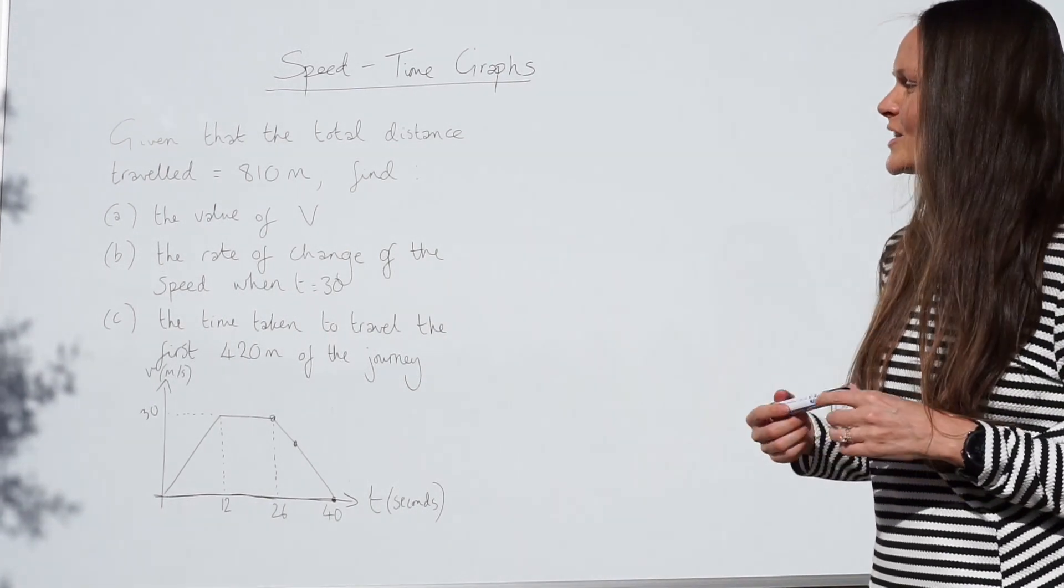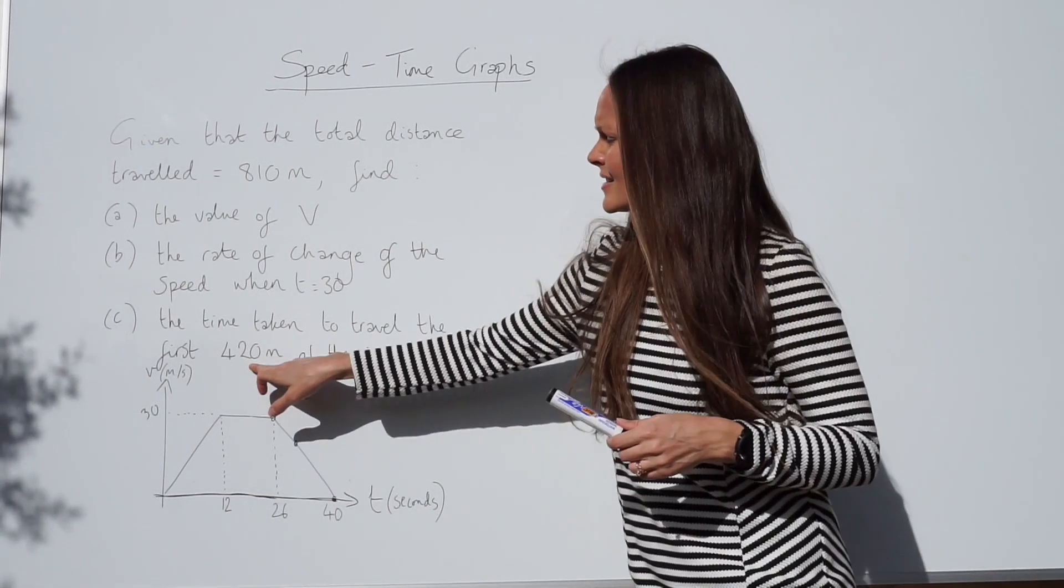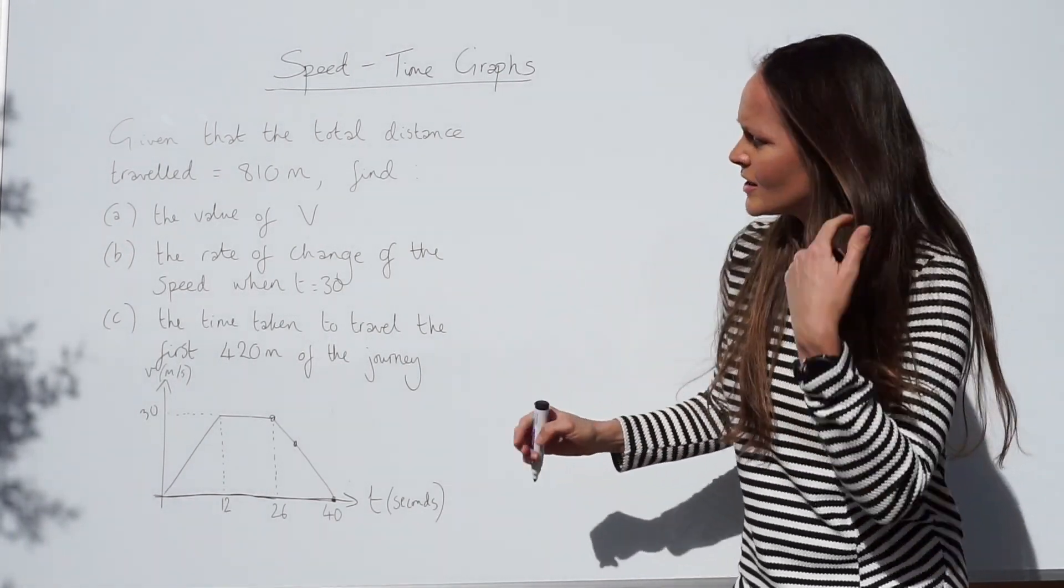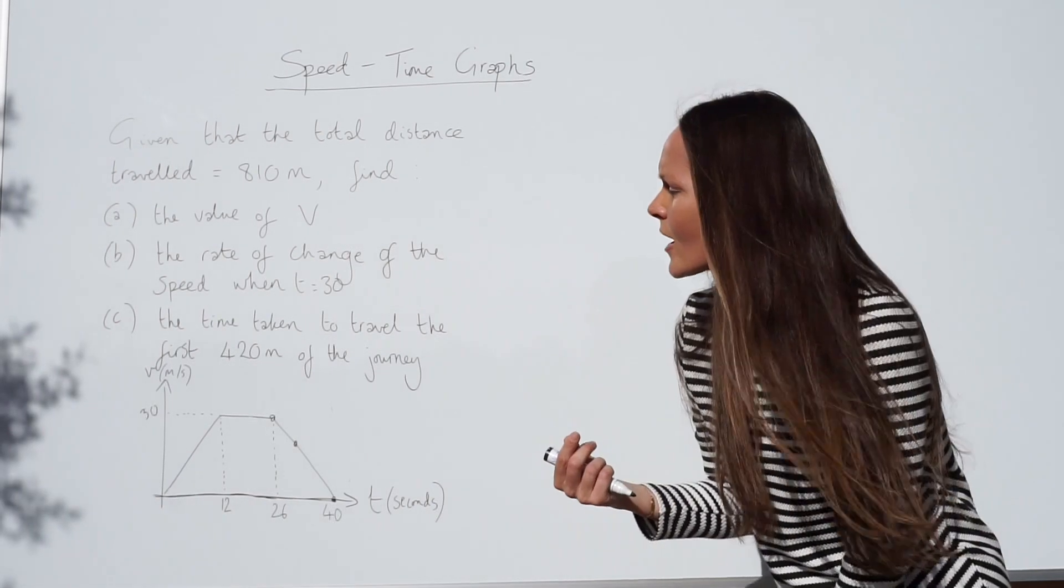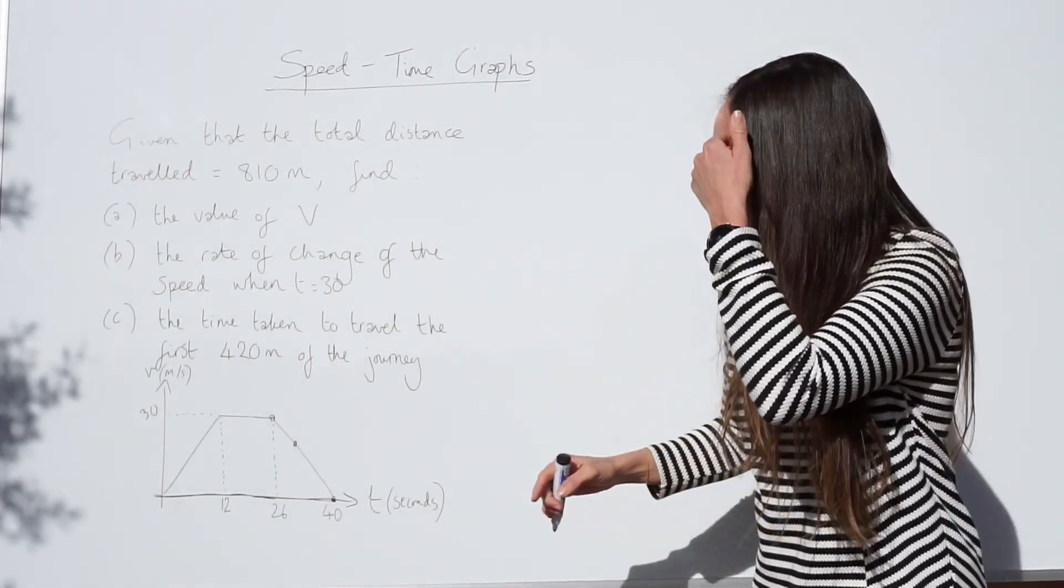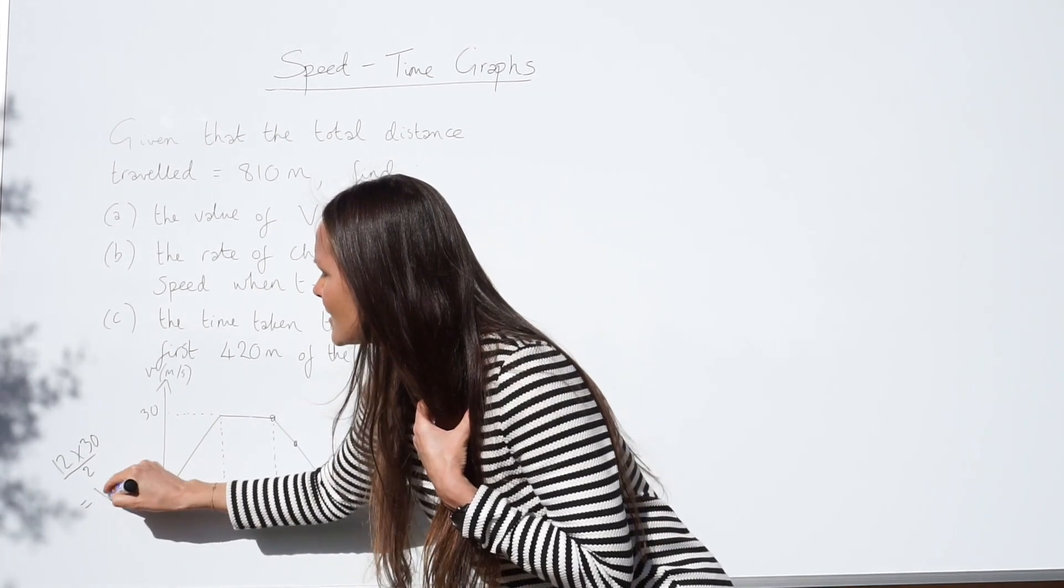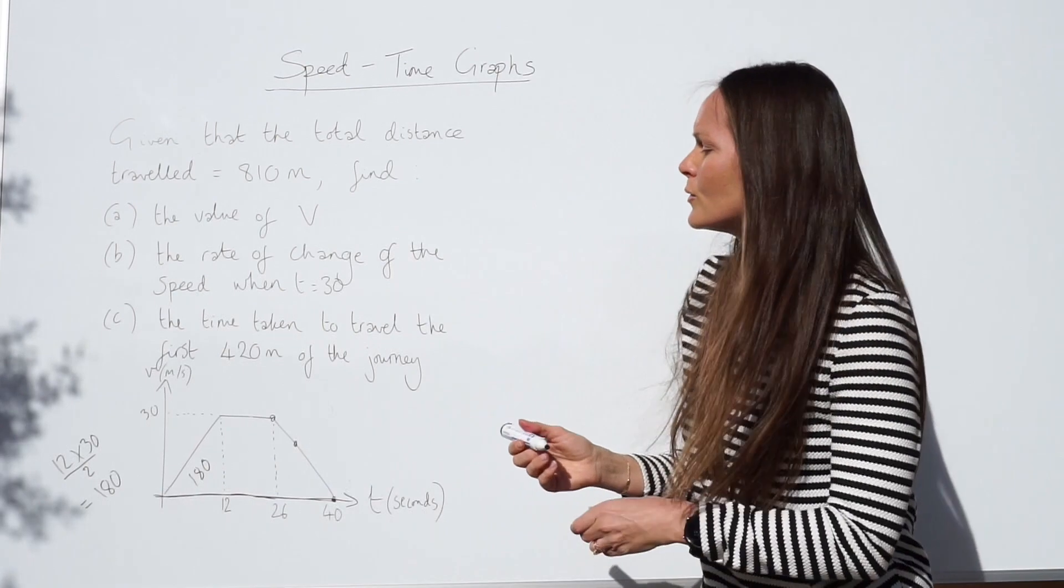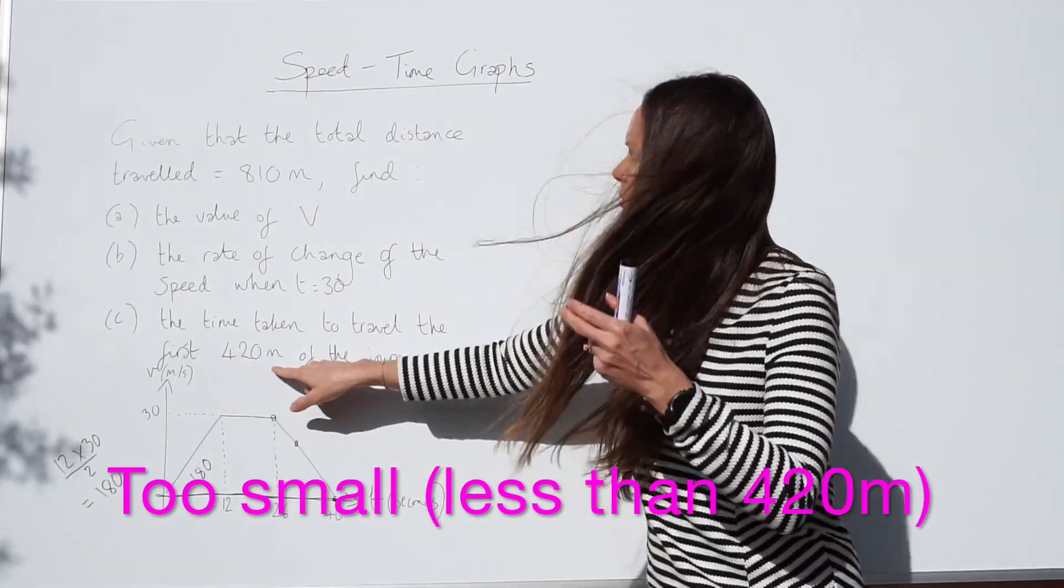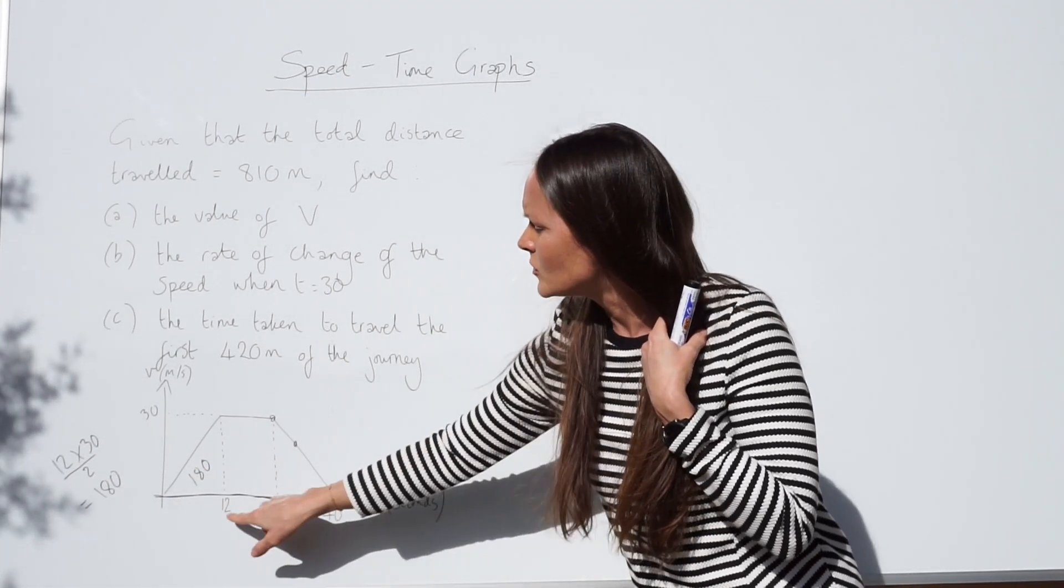So for the last part of this question, we need to work out the time taken to travel the first 420 metres of the journey. Remember, this is a distance. And to work out distance, you need to work out the area underneath the graph. I'm just going to start by working out the area of this triangle. So I want to work out the distance travelled in the first 12 seconds. To work out the area of a triangle, you need to multiply the base by the height and divide by 2. So here we've got 12 multiplied by 30, divided by 2, which gives us 180 metres. So we already know that in the first 12 seconds, we travel 180 metres. So that's too small, so I know that that distance doesn't lie within that triangle.